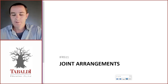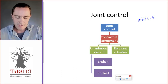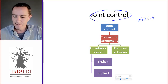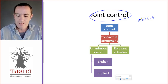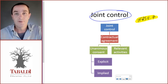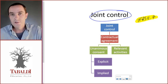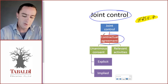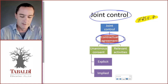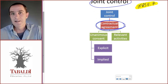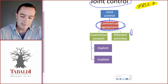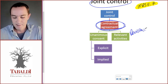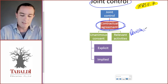This video will look at joint arrangements. A joint arrangement is where two or more parties or investors have joint control over another entity. Joint control is defined in paragraph 7 of IFRS 11. Two or more companies have joint control when there is a contractual agreement between them, and in this contractual agreement it states that the decisions made that direct the relevant activities of this company require unanimous consent.